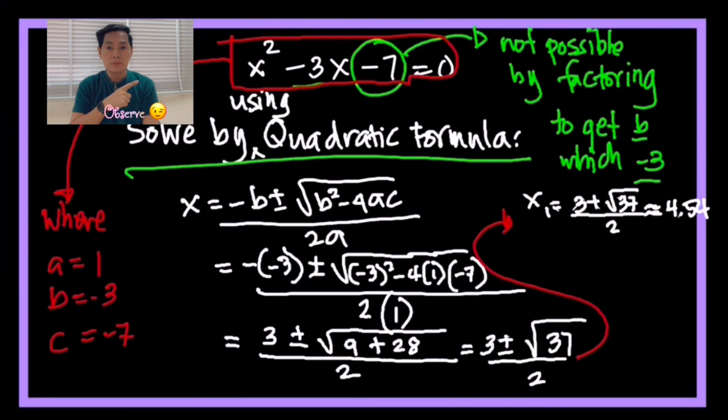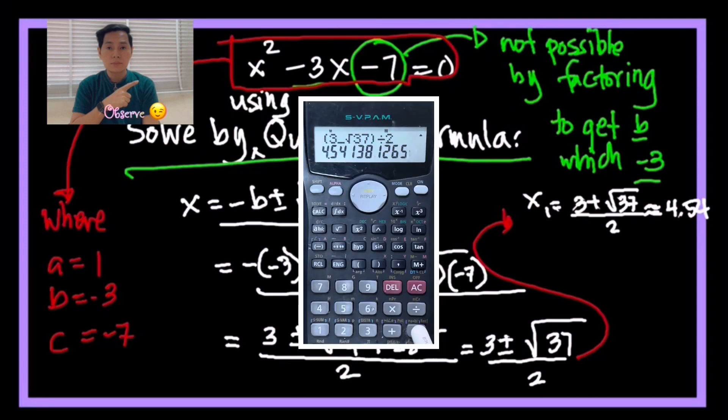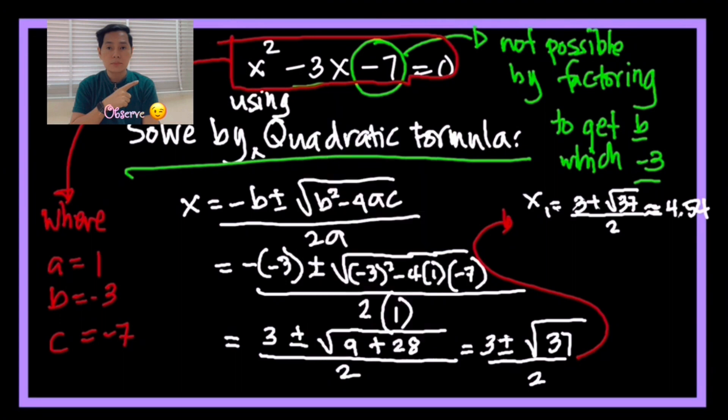Up next is the negative, the x₂. So just simply change the plus into minus to make it easier. So there you go. The value is negative 1.54.